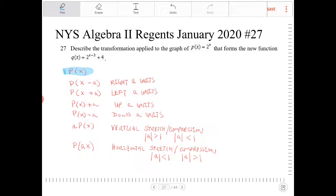If we subtract a units from x within the function, that will translate the function—translating meaning moving left, right, up, or down, or a combination of the two. So it's going to translate it a units to the right.